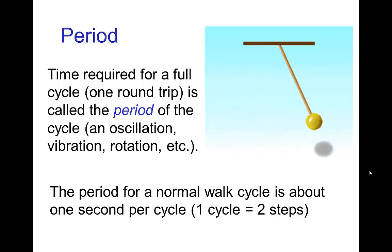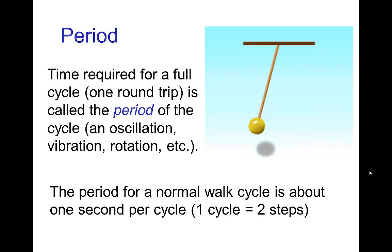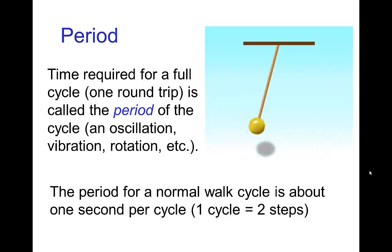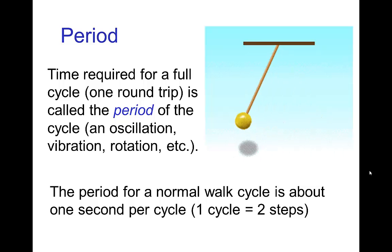The simplest one is the period for a cycle — that's the time it takes to do one full round trip, typically measured in seconds. For example, the period for a normal walk cycle would be about one second per cycle, meaning it takes about one second to complete two steps: left foot, right foot.